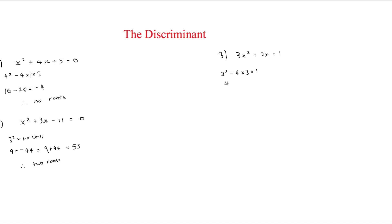So that means it's going to be 4 minus 12, which is equal to minus 8. And therefore, like the first one, this one has no roots.